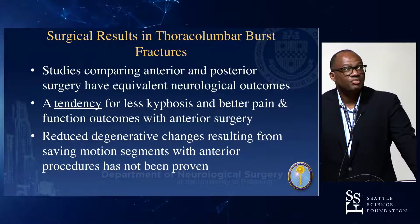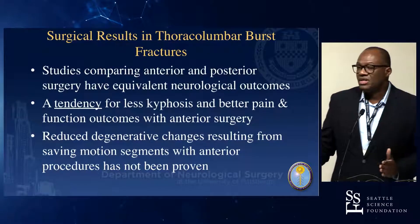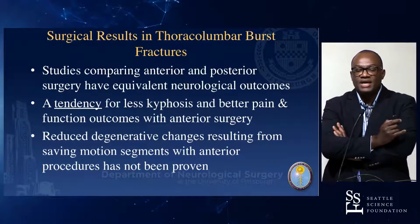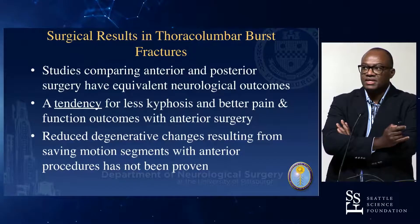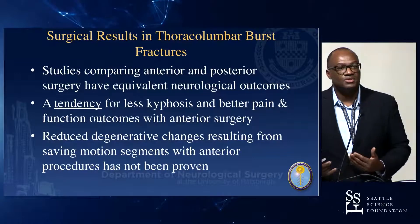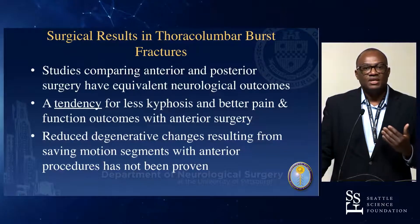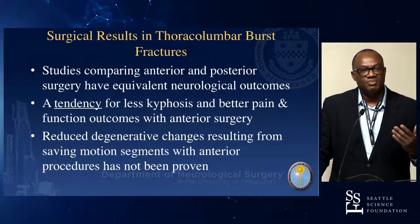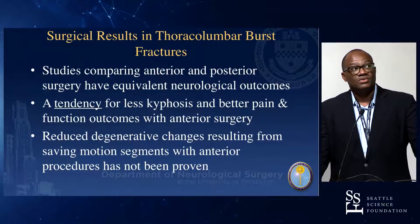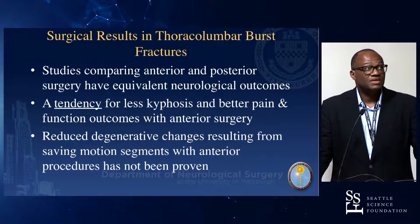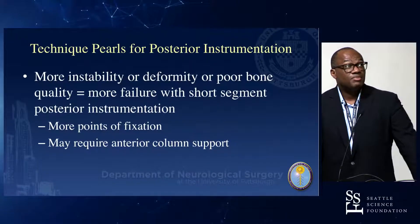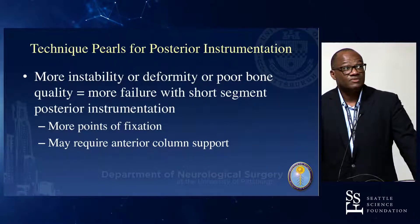Surgical results in thoracolumbar burst fractures: there's a tendency for less kyphosis and better pain and function with anterior surgery. We're restoring height, allowing the posterior ligamentous complex to function, helping with rotational feedback. But anterior surgery and older people don't mix very well — longer surgery, potential bone quality issues compromising your work. When you have degenerative changes, you have to consider anterior and posterior surgery. More instability, deformity, or poor bone quality equals failure with short-segment instrumentation.